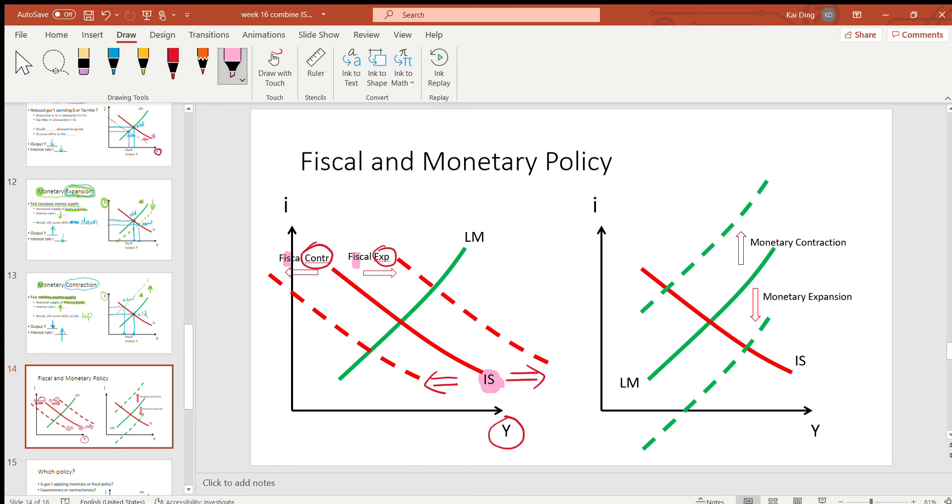On the right-hand side, we have monetary policy. We shift the LM curve either upside or downside, depending on its impact on the interest rate.